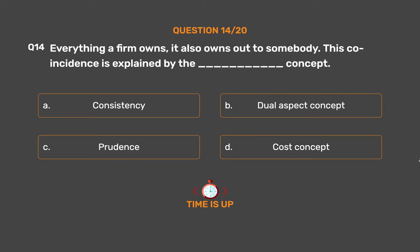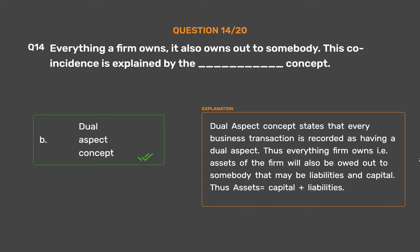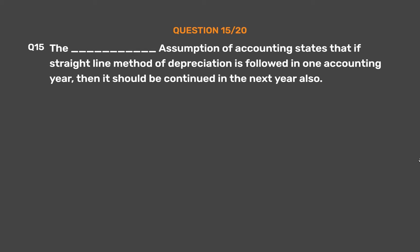The correct answer is Option B: Dual Aspect Concept. The Dual Aspect Concept states that every business transaction is recorded as having a dual aspect. Thus everything a firm owns (assets) will also be owed out to somebody — that may be liabilities and capital. Thus: Assets = Capital + Liabilities.